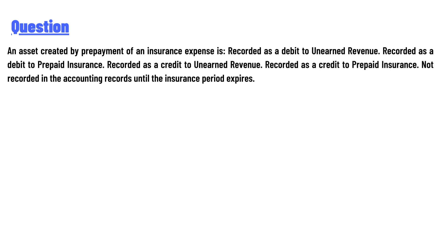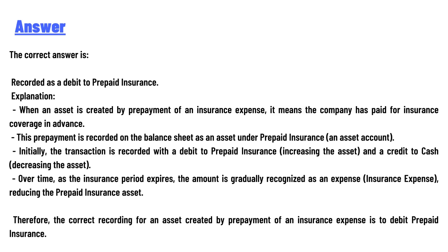The correct answer is: recorded as a debit to Prepaid Insurance. When an asset is created by prepayment of an insurance expense, it means the company has paid for insurance coverage in advance. This prepayment is recorded on the balance sheet as an asset under Prepaid Insurance.